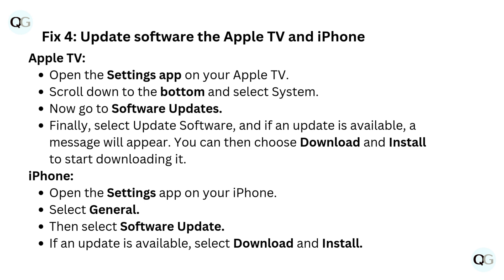Fix 4: Update Software on the Apple TV and iPhone. For Apple TV, open the Settings app, scroll down to the bottom and select System, then go to Software Updates. Select Update Software, and if an update is available, a message will appear. You can then choose Download and Install to start downloading it.